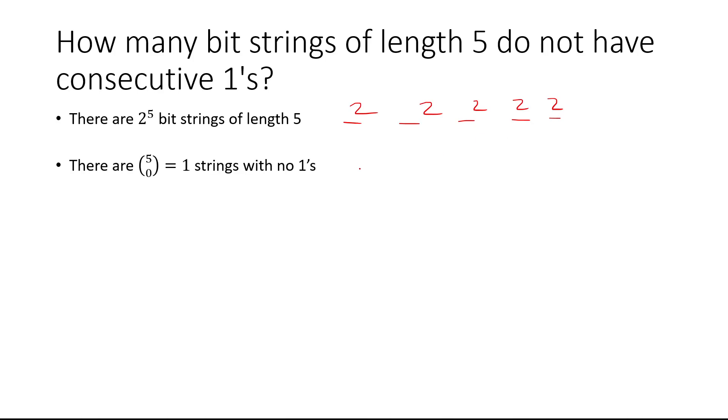Now there are 5 choose 0 strings with no 1's, so that's going to be the 1 with all 0's. There's one way to do that.